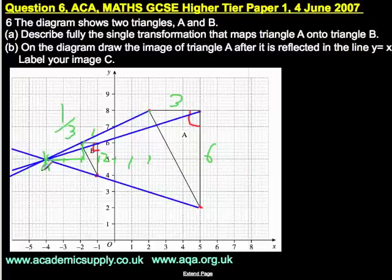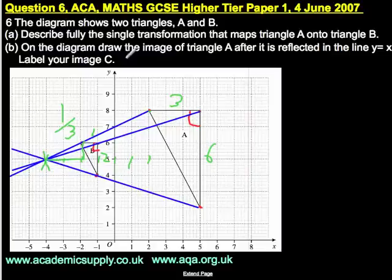Now we go on to question B. On the diagram, draw the image of triangle A after it is reflected in the line y equals x. Label your image C.